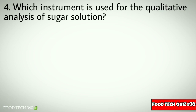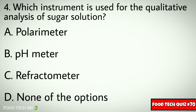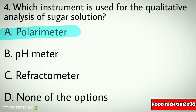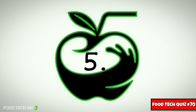Q4. Which instrument is used for the qualitative analysis of sugar solution? Options: A. Polarimeter, B. pH meter, C. Refractometer, D. None of the options. Correct answer: A. Polarimeter.